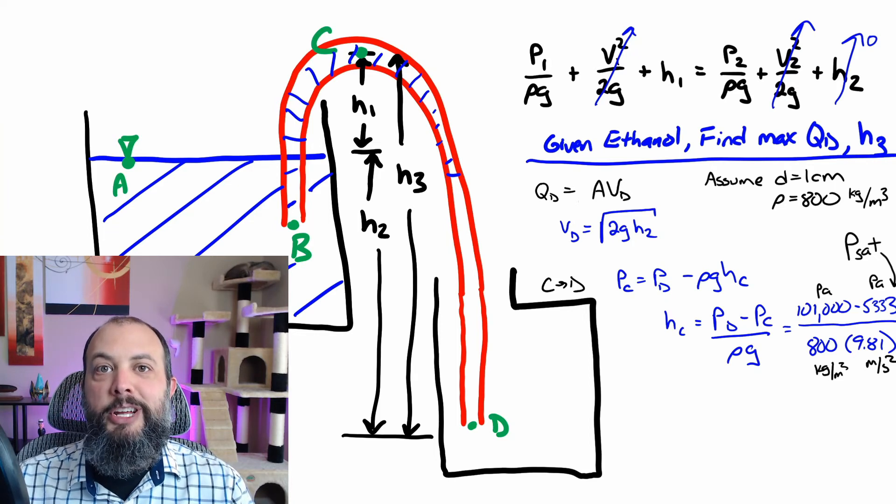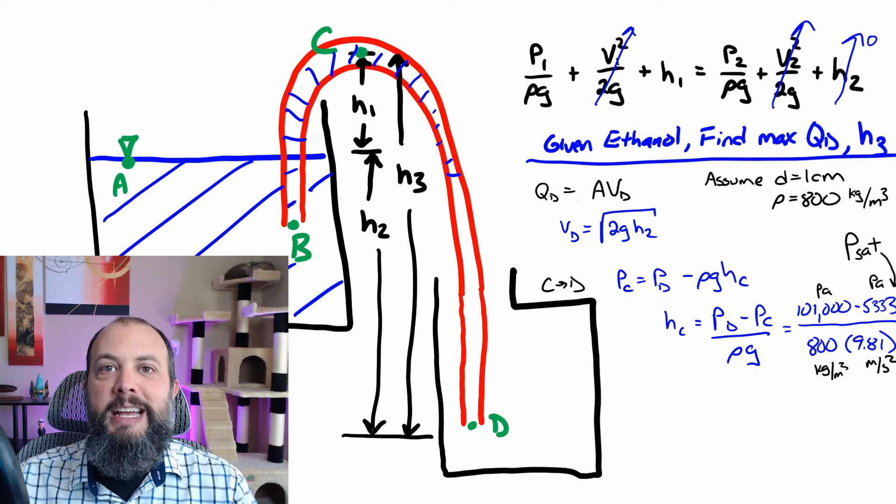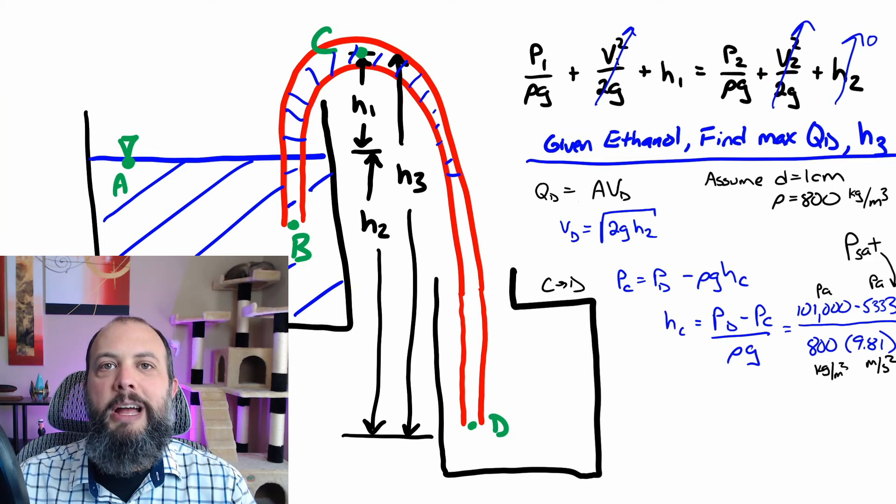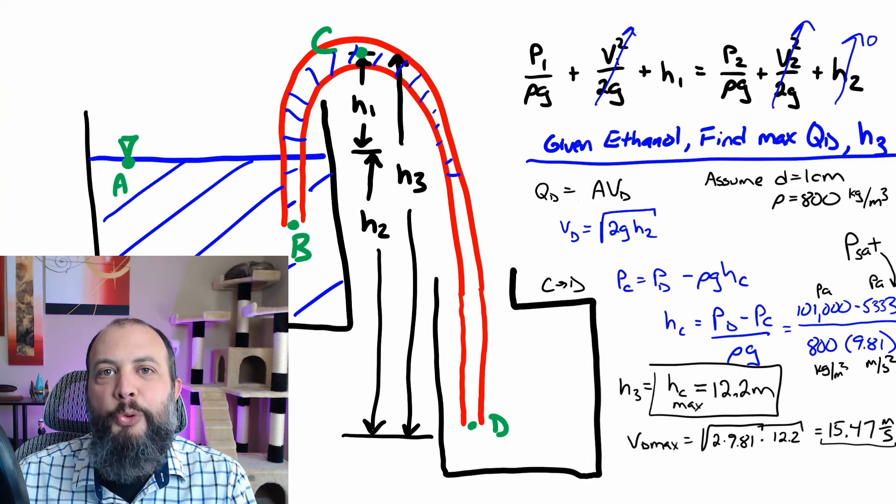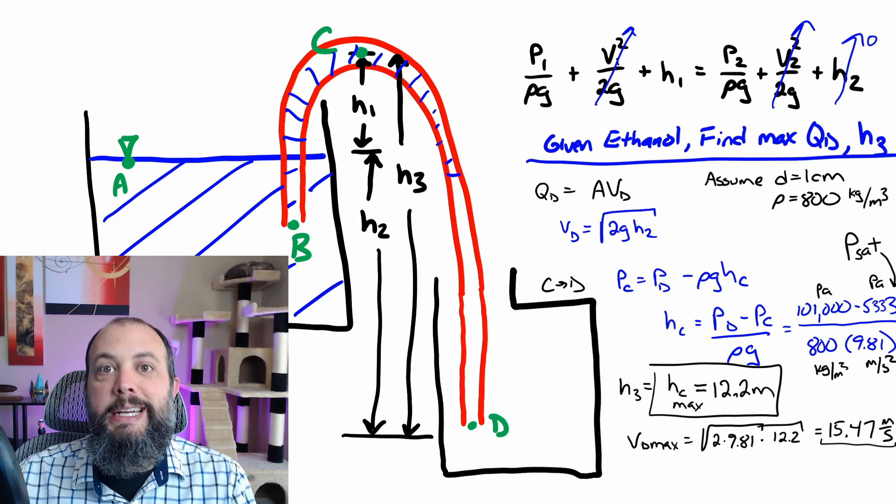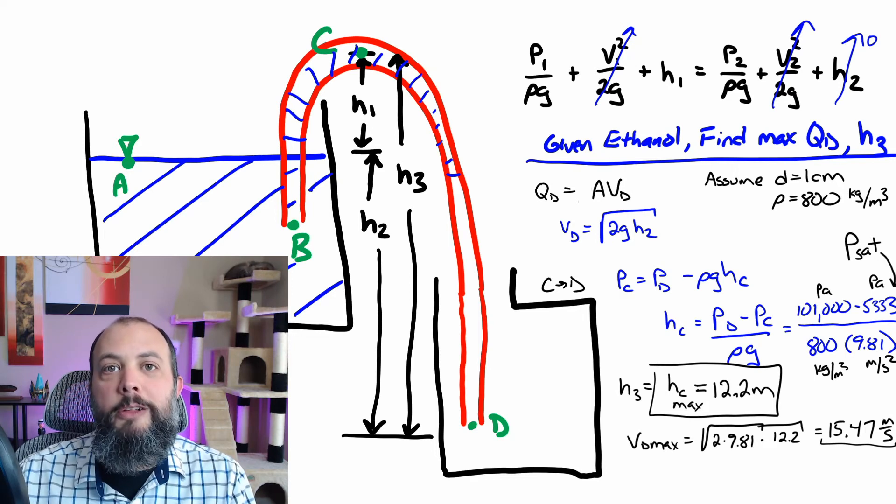So atmospheric pressure is about 101 kPa. And saturation pressure for ethanol is actually around 5 kPa. Although this does vary quite a bit by temperature, I used a value that I looked up that was around 20 degrees Celsius. So for ethanol, we get a maximum height of a little bit over 12 meters. And from looking at this equation, you can see that density is in the denominator of this expression. You may be able to predict that the maximum height for a water siphon is actually going to be a little bit smaller than this. It's usually in the ballpark of about 10 meters.